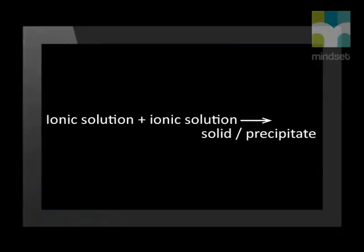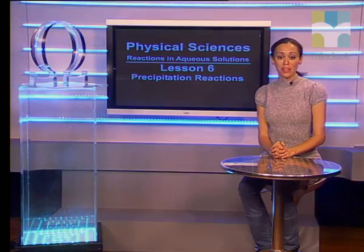A precipitation reaction is a reaction where two ionic solutions are mixed and an insoluble salt — in other words, a solid — is formed in the solution. This solid is called a precipitate. These precipitation reactions can be very useful. They can be used to remove unwanted ions from substances and for manufacturing certain chemicals. Another use is to identify specific ions in solution, and it is this use that we are going to investigate in the lesson.